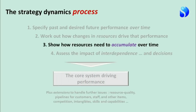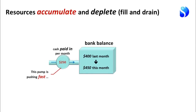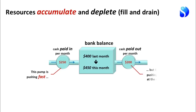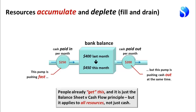Next we need to understand how resources accumulate over time — a critical mechanism in business performance. This is very similar to what happens with your bank account. The amount of money in your bank is the sum of all the money you ever paid in minus all the money you ever paid out. So if the bank balance went from $400 to $450 and we paid $250 in, then we must have paid $200 out. The important thing to recognize is that this mechanism applies to all resources, not just cash.